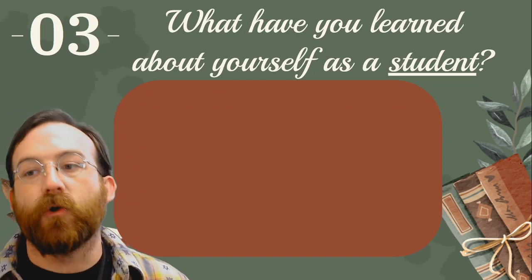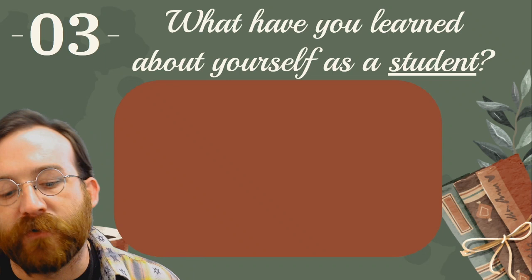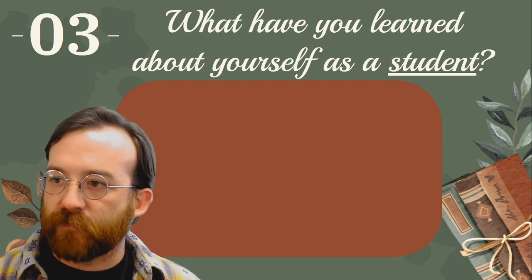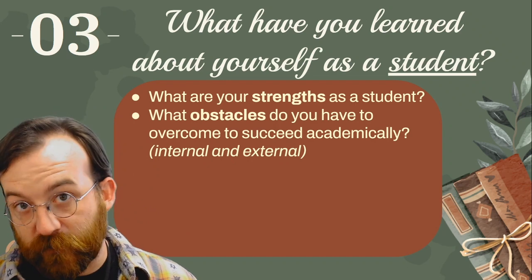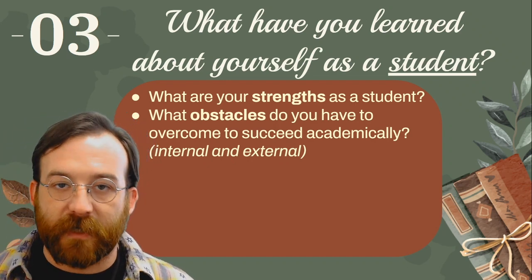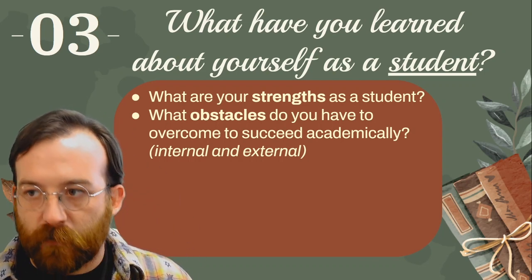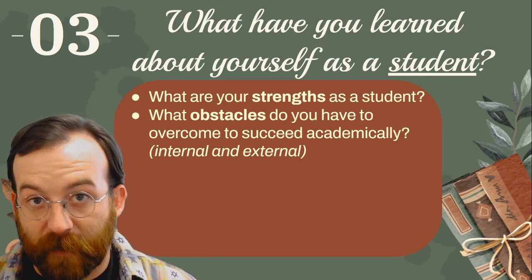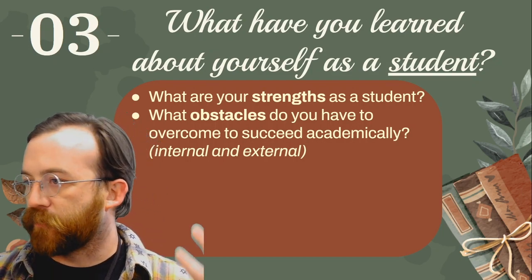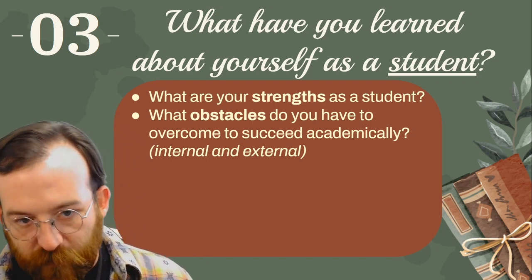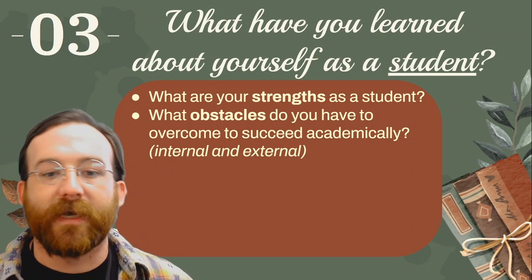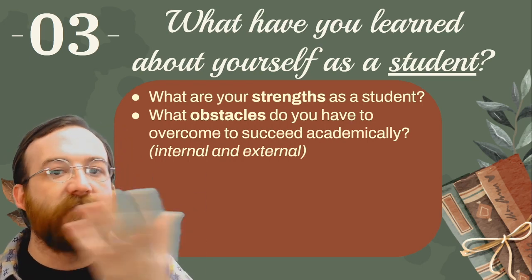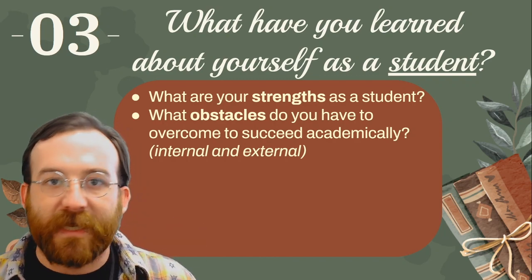Lastly, I want you to think about what you have learned about yourself as a student — specifically academically. What are some of your strengths? What are some of the obstacles in front of you in order to succeed academically? Those obstacles can be internal, like self-doubt or thinking that you're not smart enough or good enough. Or maybe they're external — something about how you're transported to school or what home is like that makes certain things more difficult. Think about whether those obstacles are internal, meaning you can control them, or external, meaning they're in your environment and everyday life.